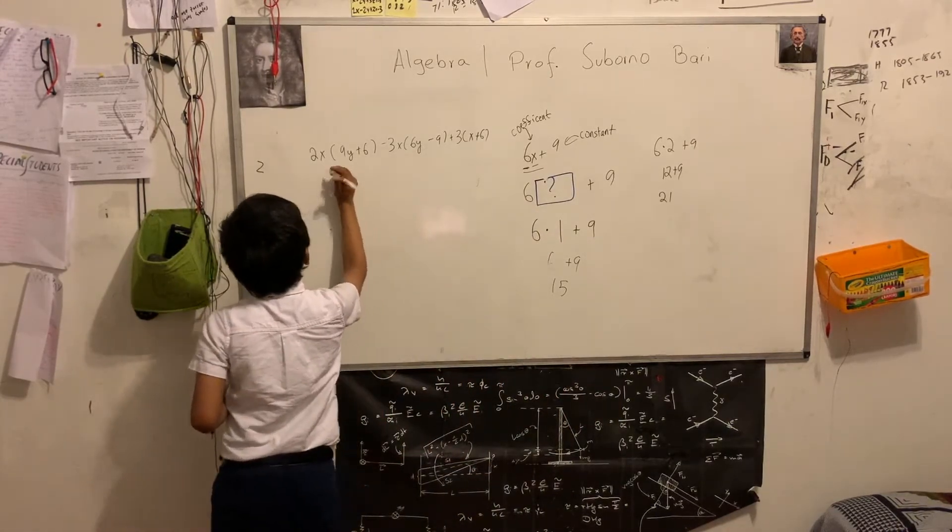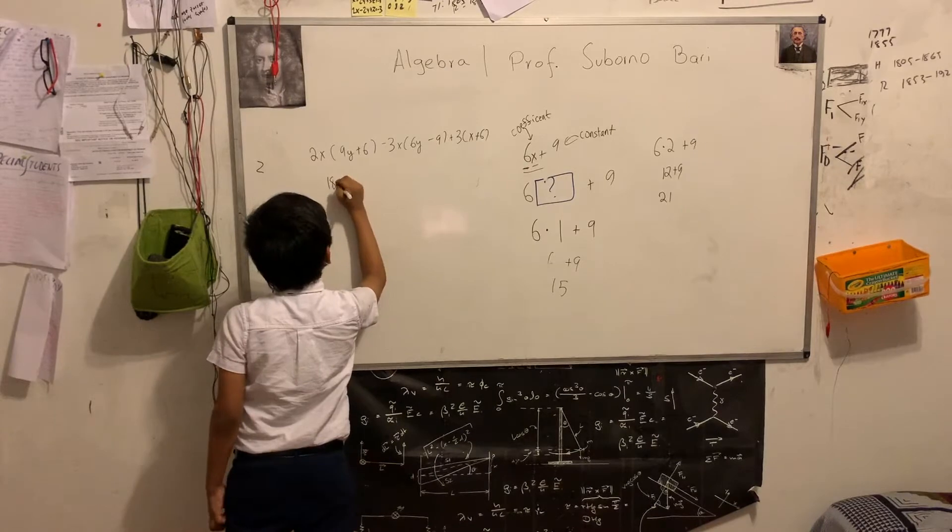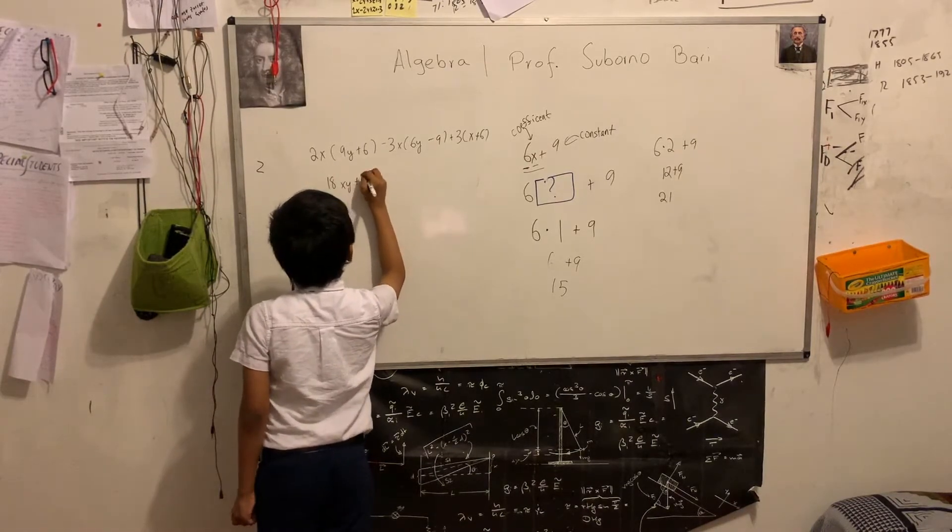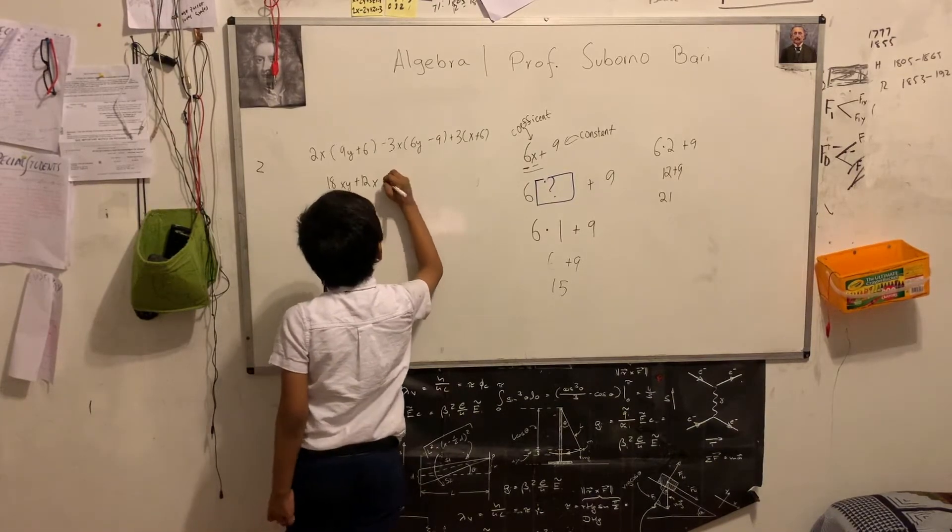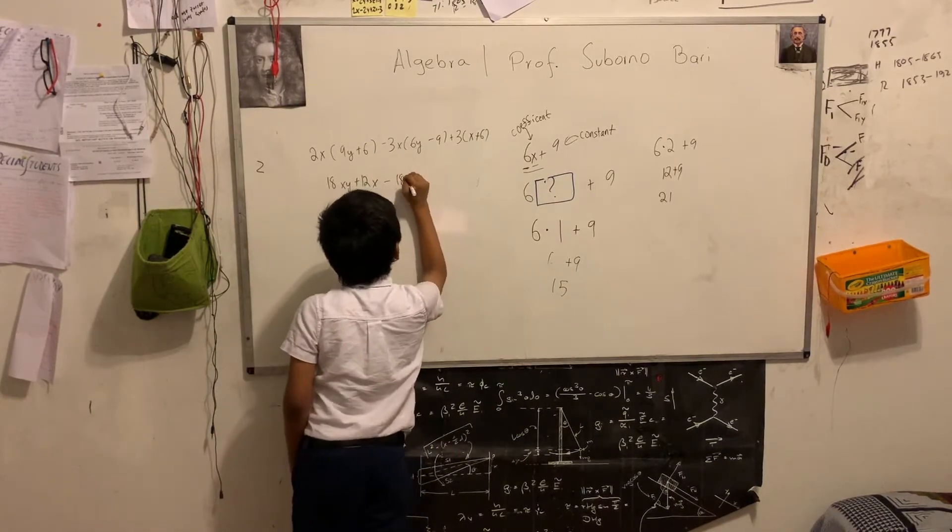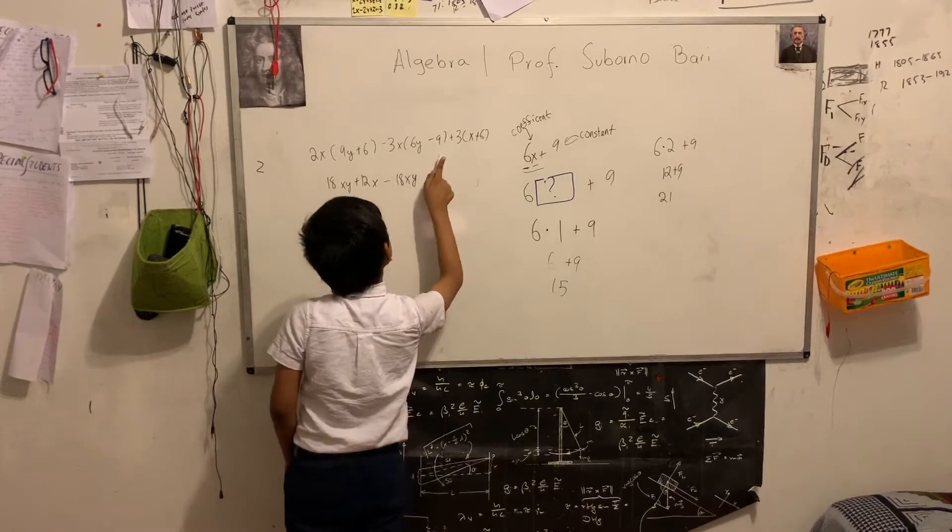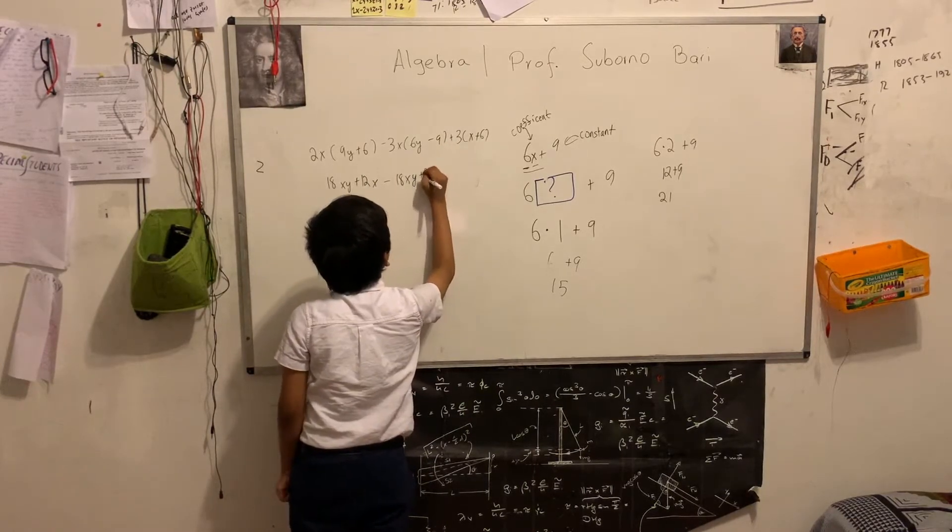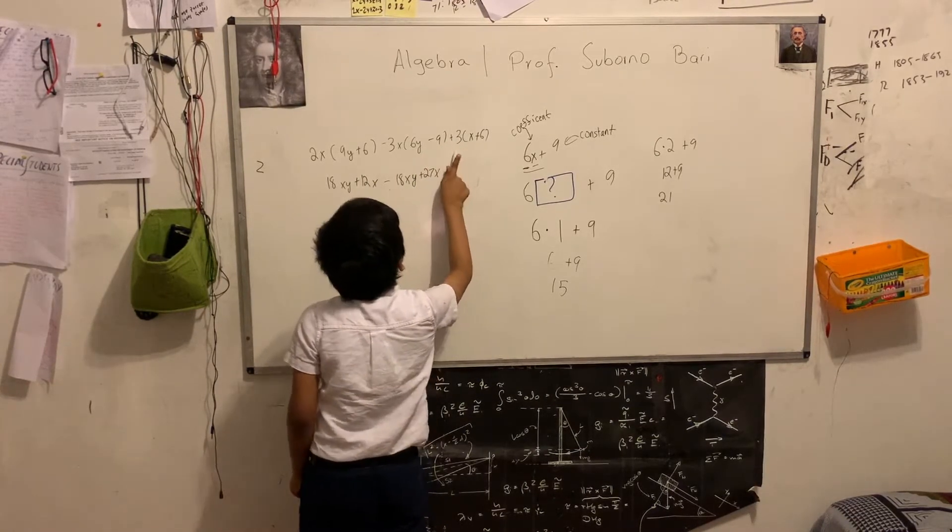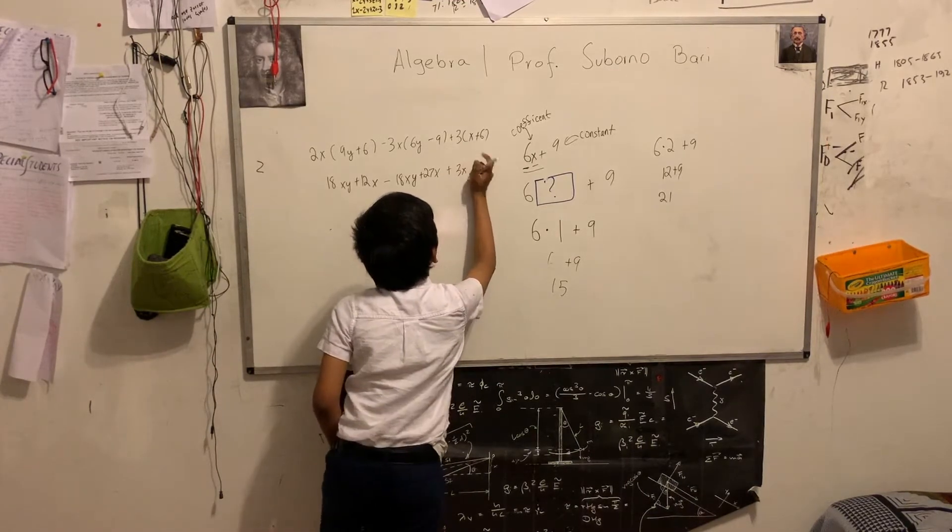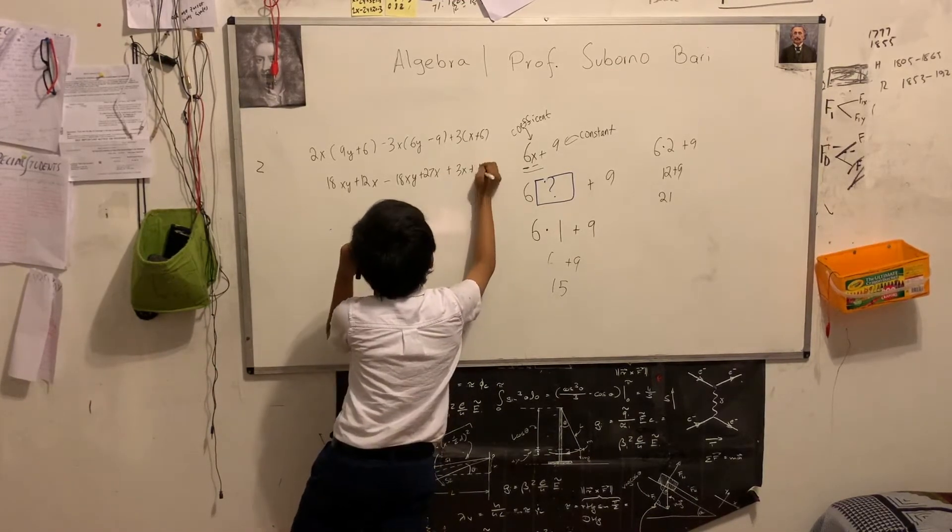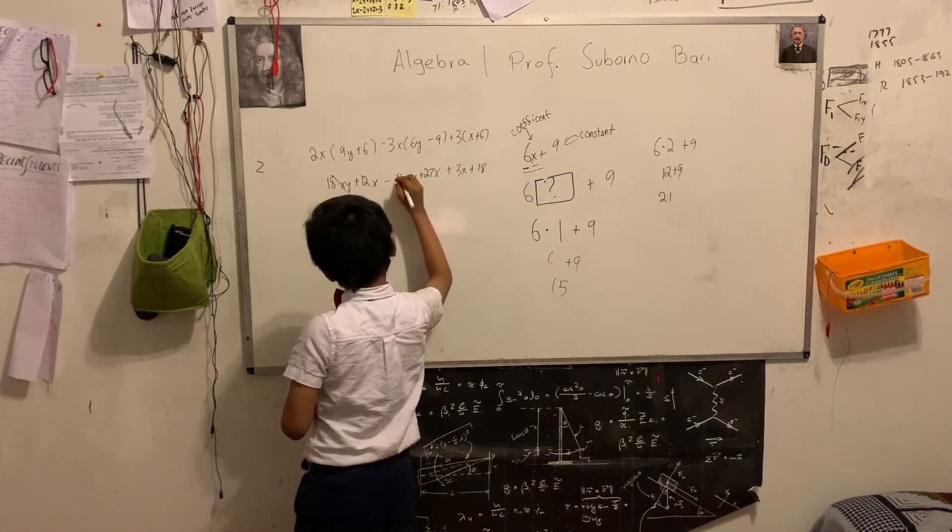2x times 9y is 18xy. 2x times 6 is 12x. Minus 3x times 6y is going to be minus 18xy. Minus 3x times minus 9 is going to be plus 27x. Plus 3 times x is 3x. And 3 times 6 is 18. Now, let's simplify. These cancel out.